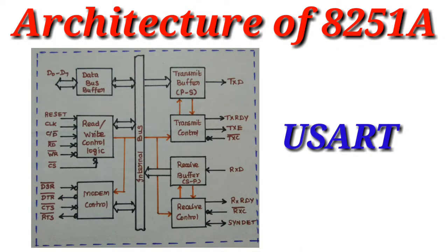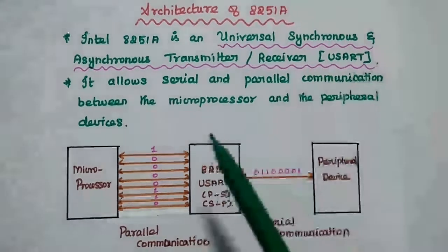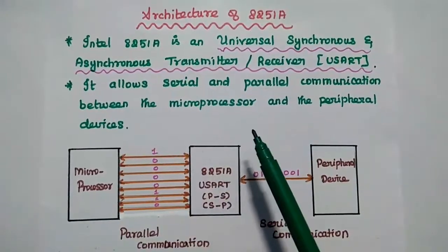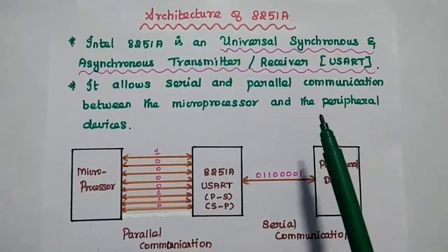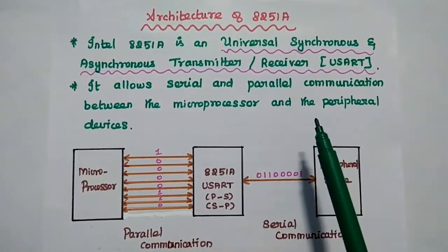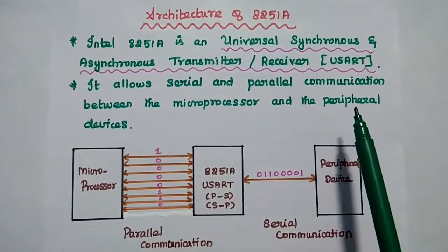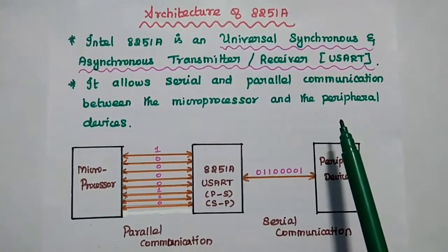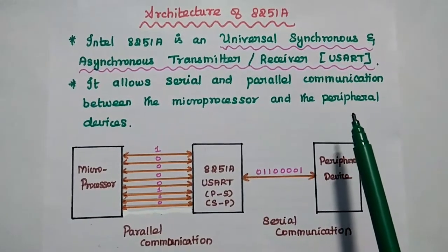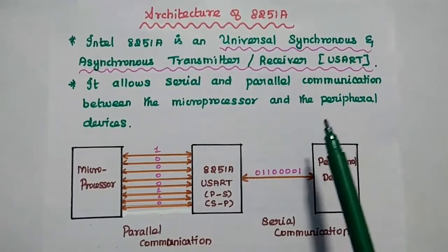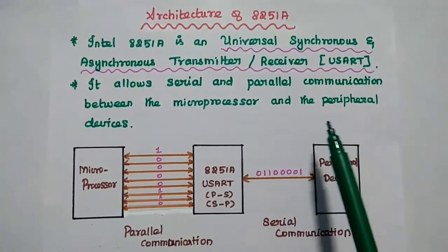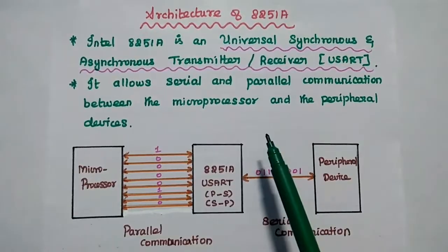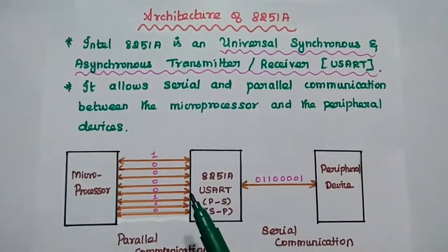Now we are going to discuss the architecture of 8251A in detail. Intel 8251A is a Universal Synchronous and Asynchronous Receiver/Transmitter (USART). It is used as an interface device between the microprocessor and peripheral devices because it allows both serial and parallel communication between them.